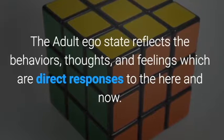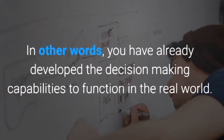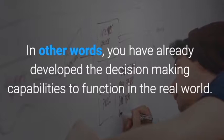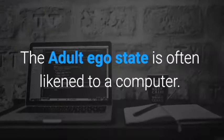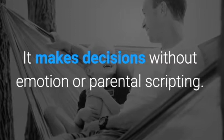The adult ego state reflects the behaviors, thoughts, and feelings which are direct responses to the here and now. It's a logical form of thinking — unscripted. You have already developed the decision-making capabilities and critical skills to function in the real world. That's why the adult ego state is often likened to a computer: it makes decisions without emotion or parental scripting.